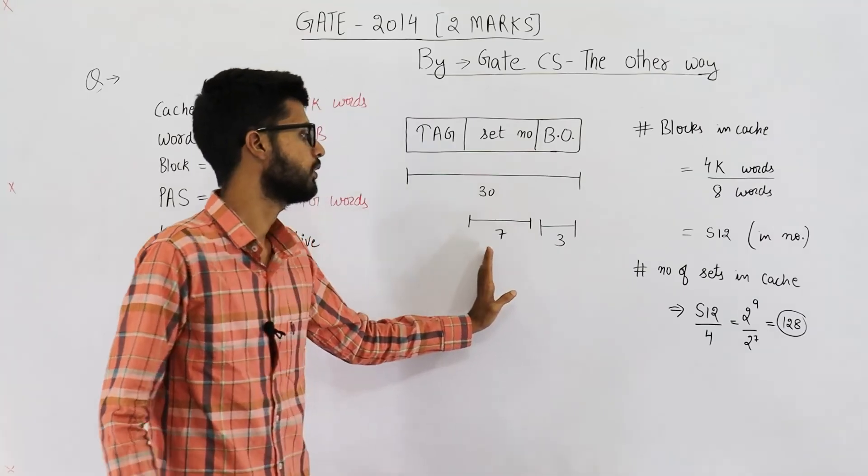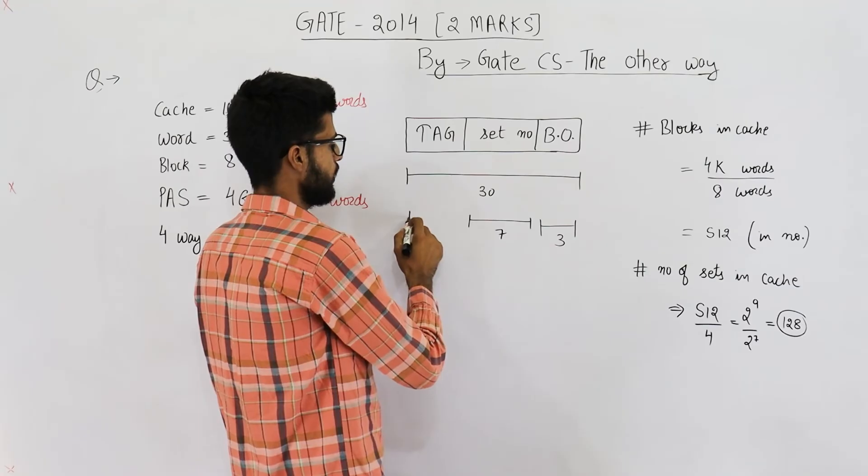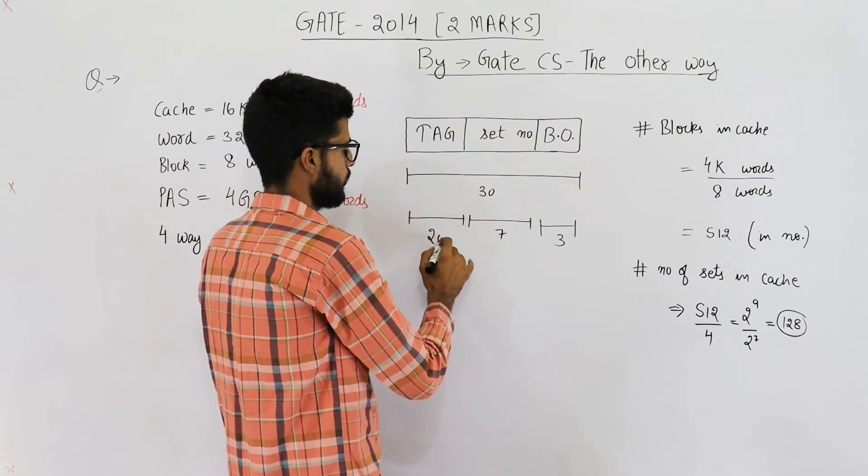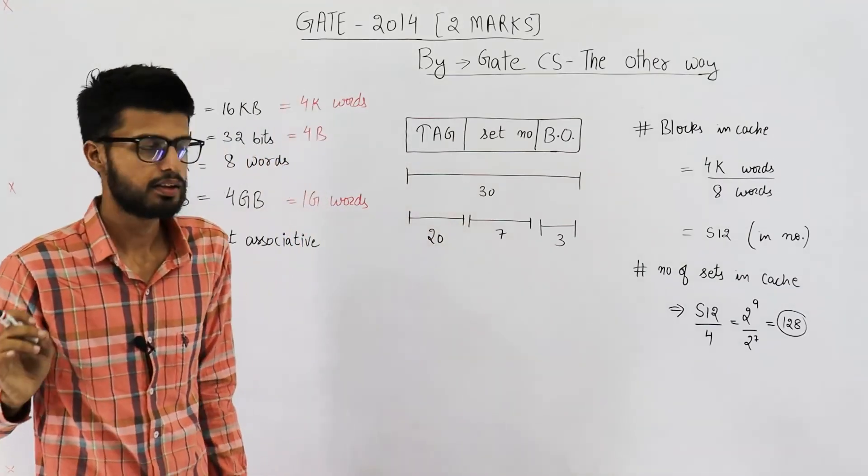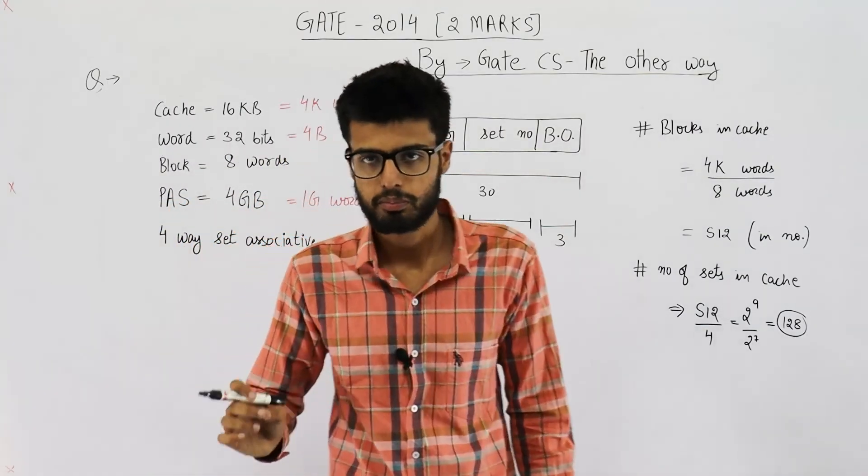Okay, now 7 plus 3 is 10. 30 minus 10 will be 20. So your answer to this question is 20 bits. Tag will be of 20 bits.